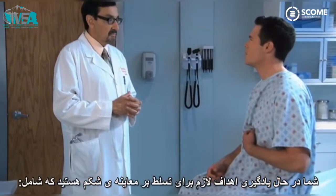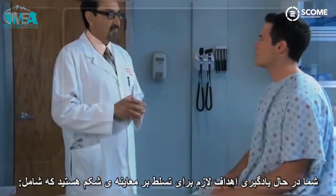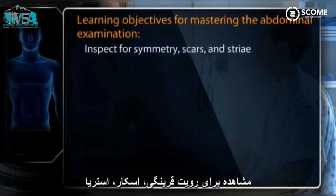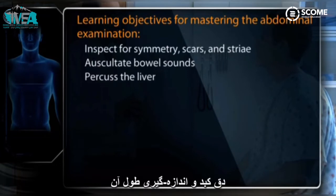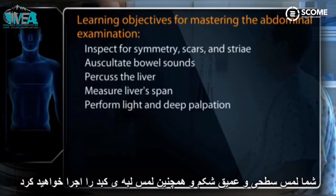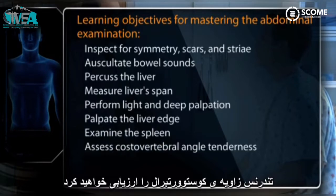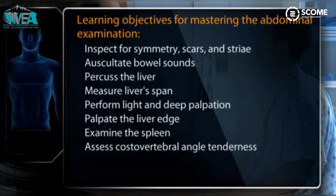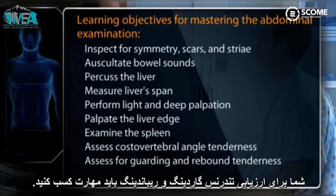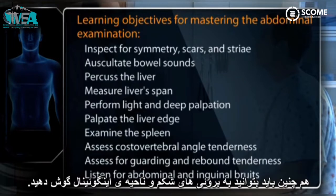Your learning objectives for mastering the abdomen examination are to inspect for symmetry, scars, and striae, to auscultate bowel sounds, percuss the liver, and measure its span. You will perform light and deep palpation of the abdomen and palpate the liver edge. You will examine the spleen and assess costo-vertebral angle tenderness. You should be skilled at assessing for guarding and rebound tenderness and be able to listen for and identify abdominal and inguinal bruits.